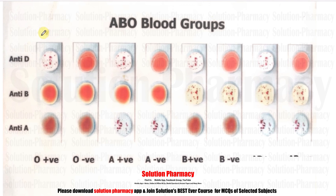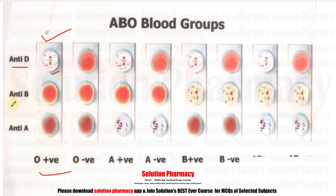In the first slide, agglutination reaction occurs only in the drop to which anti-D was added, so the blood group is O positive. In blood group O, both A and B agglutinogens are absent from the RBC, so no agglutination occurs with anti-sera A or anti-sera B. In the second slide, no agglutination reaction occurs in any drop — with anti-A, anti-B, or anti-D — meaning all antigens A, B, and D are absent, so the blood is O negative.